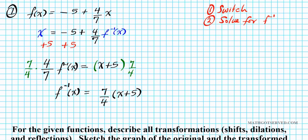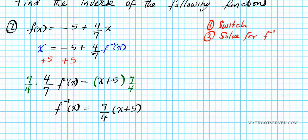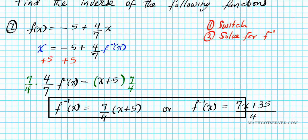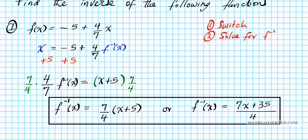This is one form of writing it, or we can distribute seven over four and write it as f inverse of x equals seven x plus 35 divided by four, by simply distributing the numerator seven to x and five. Either of these two forms will suffice for the inverse of the function f.